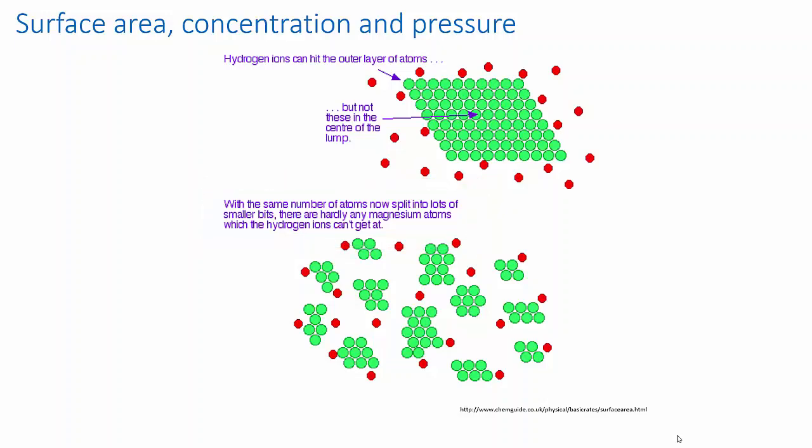Car engines use surface area effects to increase reaction rates. By spraying the fuel into the engine cylinder in microscopic droplets, rather than in, say, a single liquid stream, the fuel burns more rapidly.